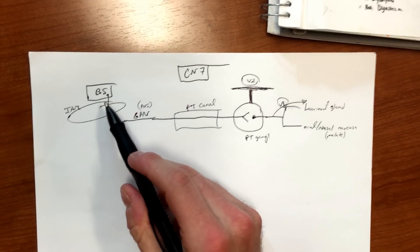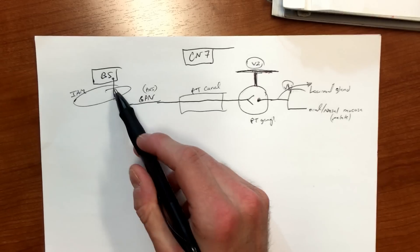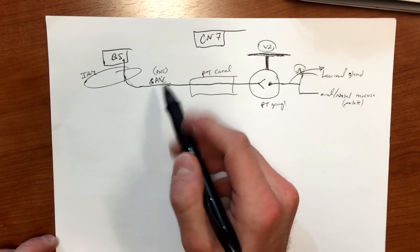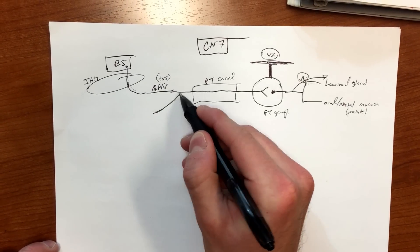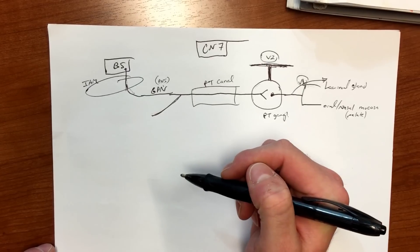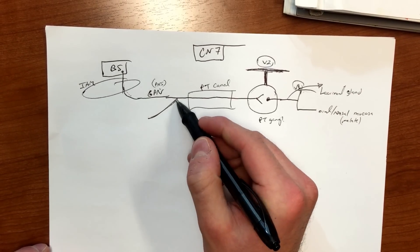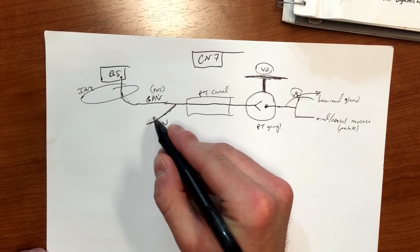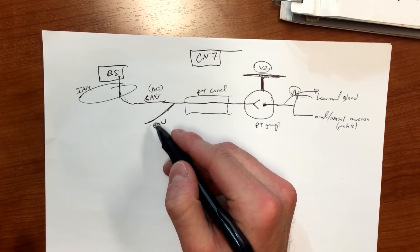And something else to add - this is the greater petrosal nerve. Greater petrosal nerve, like we said, is parasympathetics. But you also have this nerve that comes in later - do you guys know what it is, by the way? Which nerve joins it? Deep petrosal nerve.